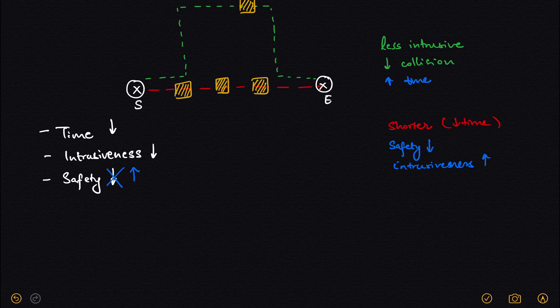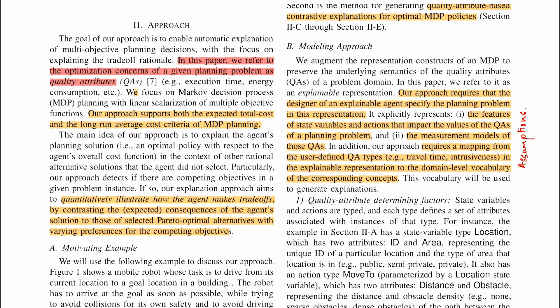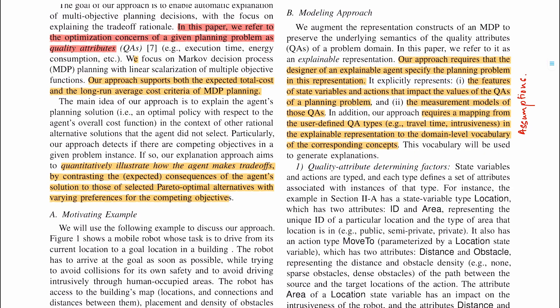For intrusiveness to be minimized, the robot ideally should take a path that has none of these desks. Third is safety: if the robot encounters objects there is some probability it will collide, making it less safe. So for the safety objective as well, the agent ideally takes a path with no brown objects. There are two paths marked in green and in red.